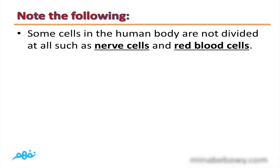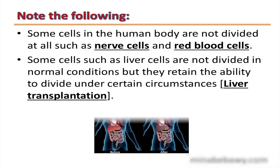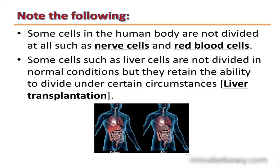Some cells in the human body do not divide at all, such as nerve cells and red blood cells. Some other cells, such as liver cells, are not divided under normal conditions, but they retain the ability to divide under certain circumstances, such as liver transplantation.